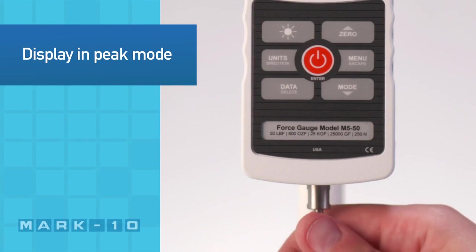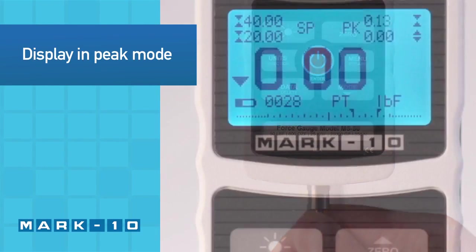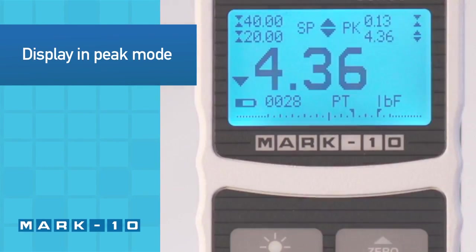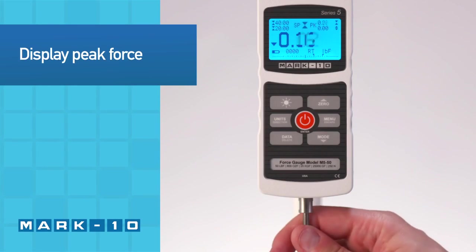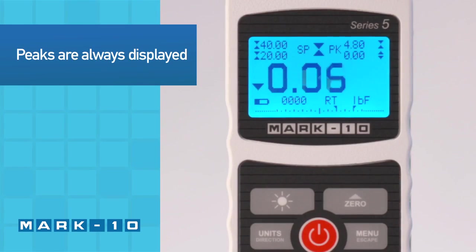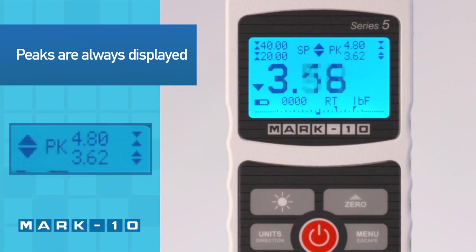In peak mode, the display freezes when the peak force has been reached. Regardless of the mode, the tension and compression peaks are always shown in the upper right corner of the display.